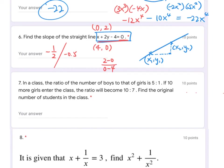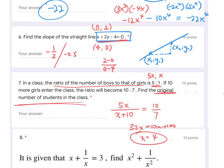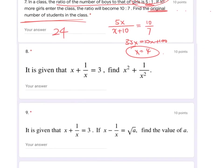Number seven is a ratio problem — just use algebra to form an equation. Since the ratio of boys to girls is originally 5:1, let the numbers be 5x and x respectively. After 10 more girls enter, the new ratio is 10:7, so with girls becoming x + 10 and boys remaining 5x, you solve to get x = 4. The original total number of students is 5x + x = 24.